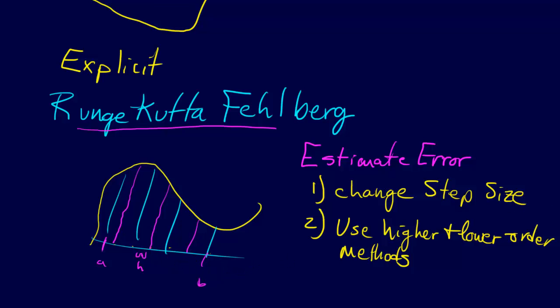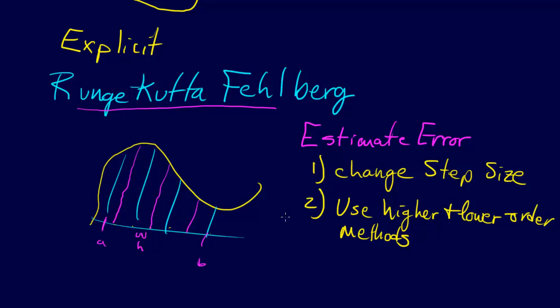And so the points on the interval at which we have to evaluate the function are determined by the coefficients, by the k coefficients and the a coefficients in the Runge-Kutta method that determine where you're going to evaluate the function.